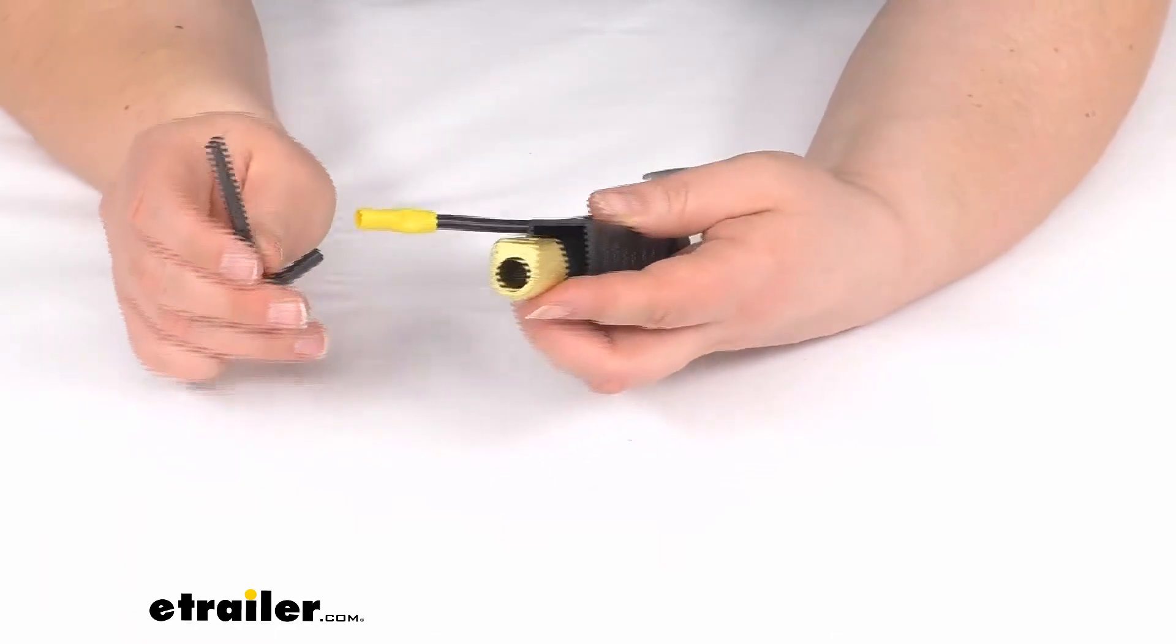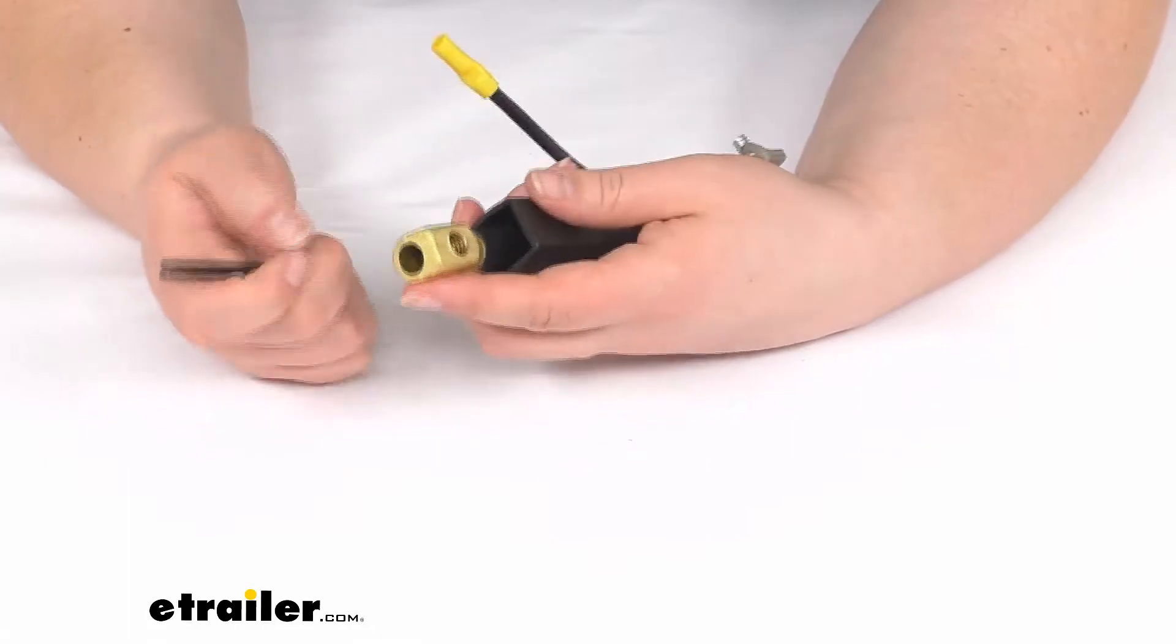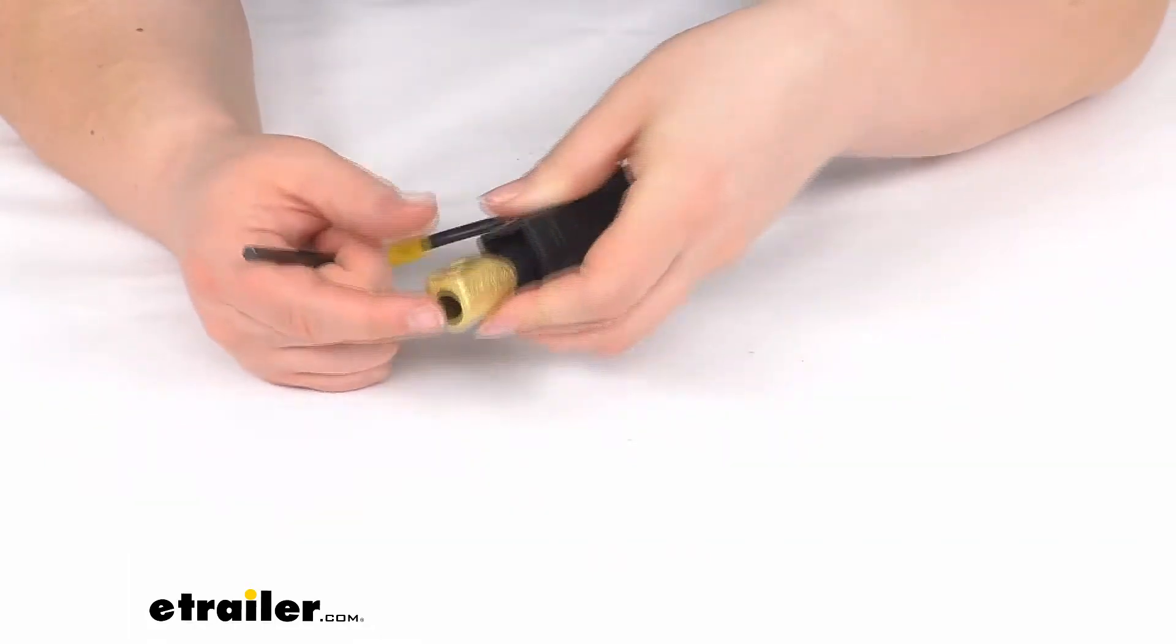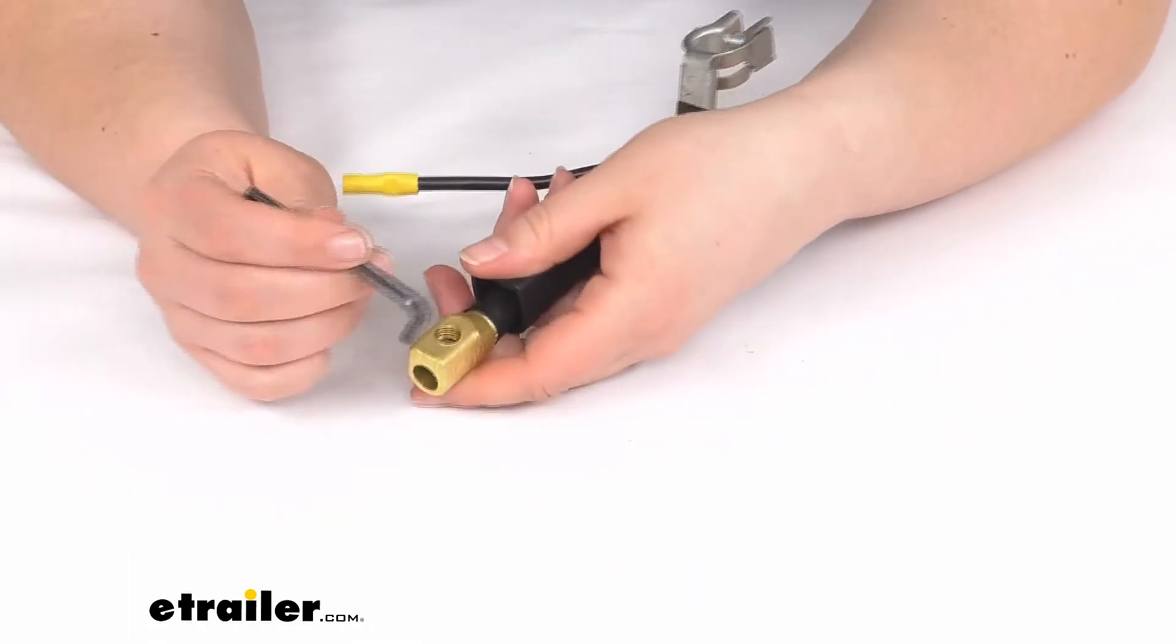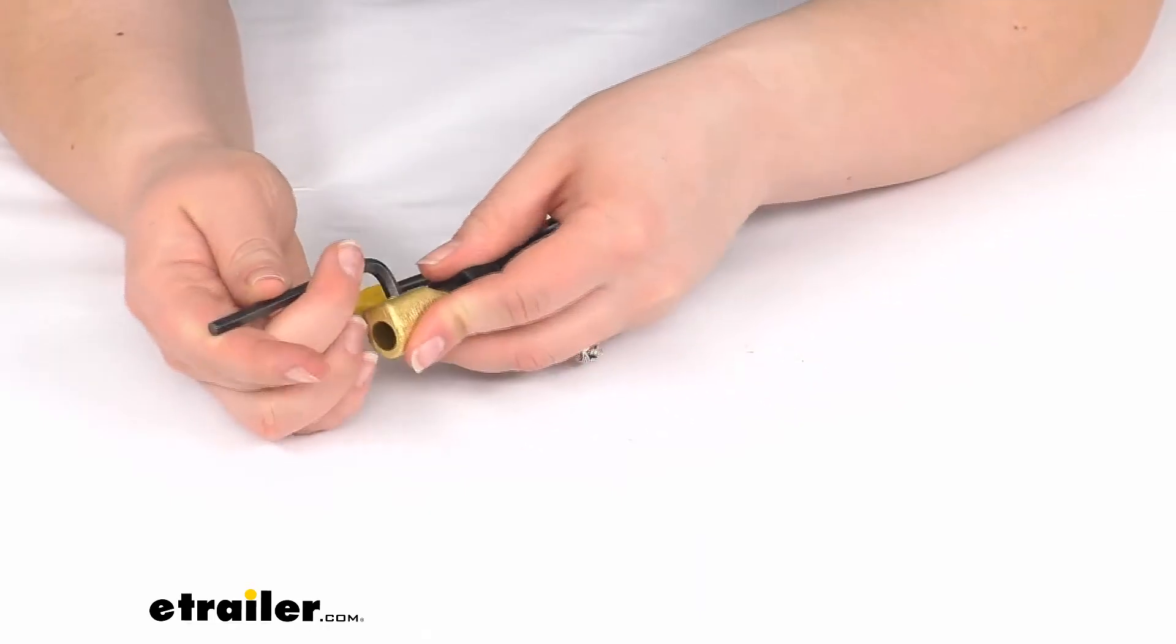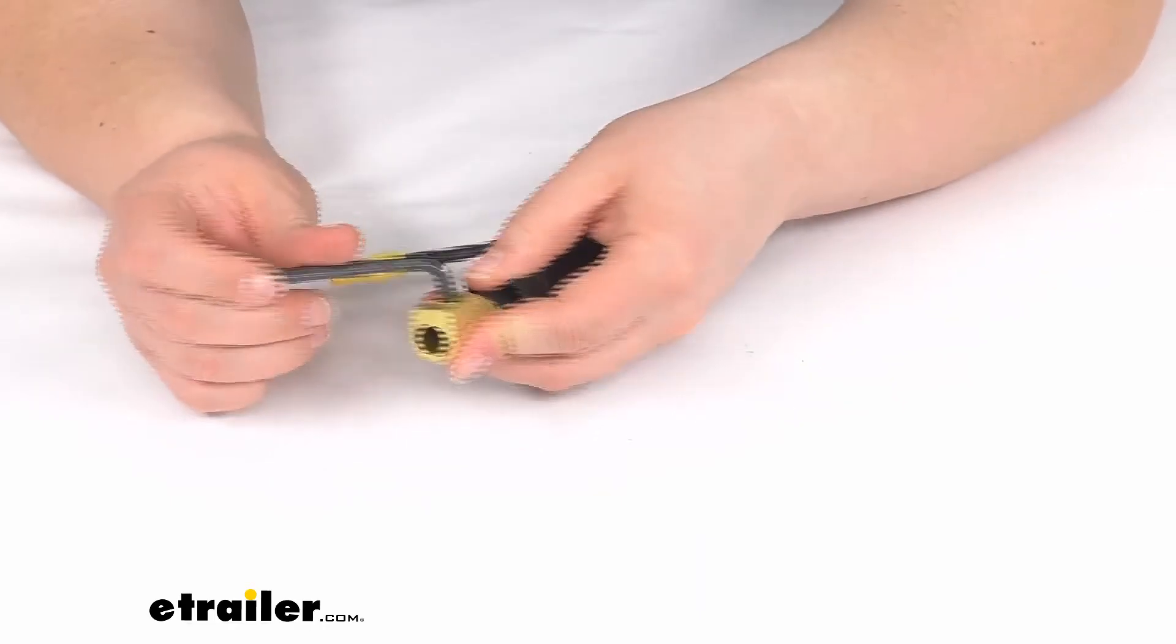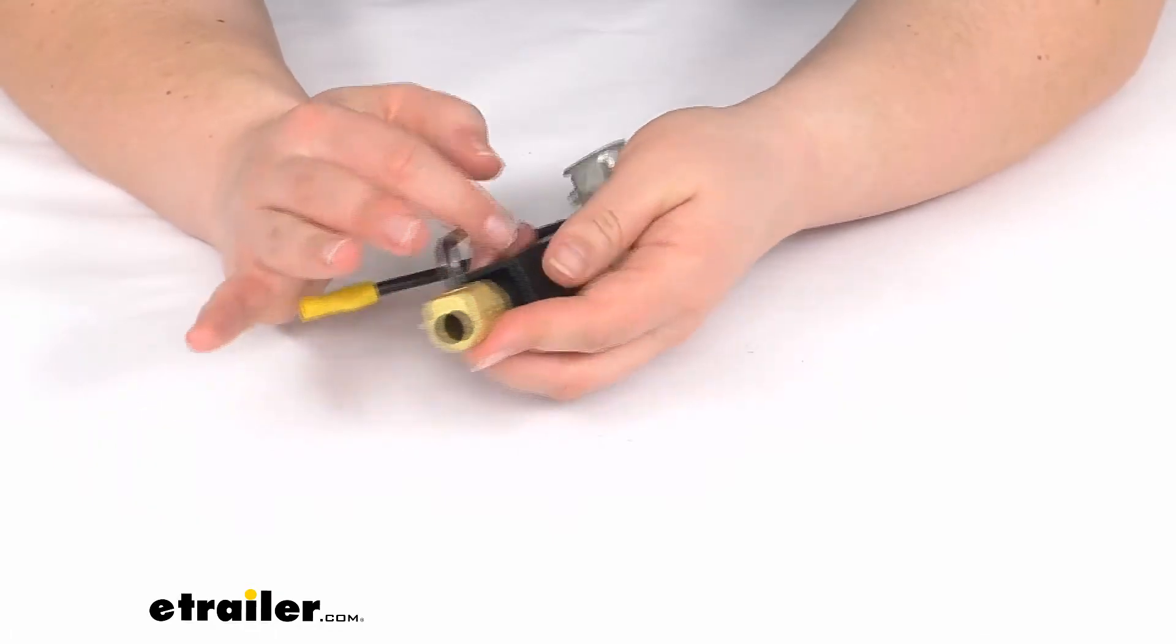That screw will go all the way to the side of the cable, so it can tighten down pretty far in there. Even if it's not quite as big as 2 gauge wire, it should still work just fine. But typically with battery cables, you're going to have a pretty thick cable.